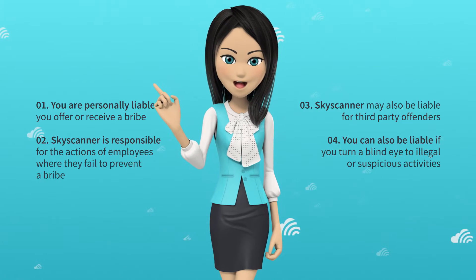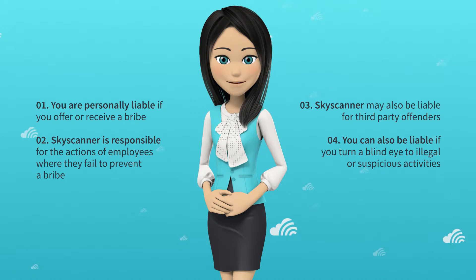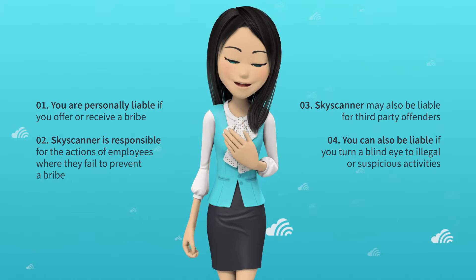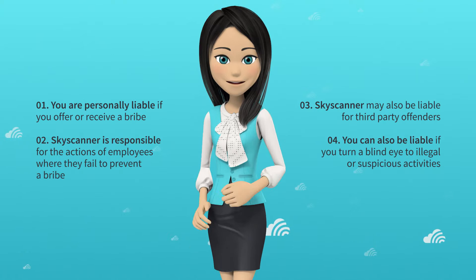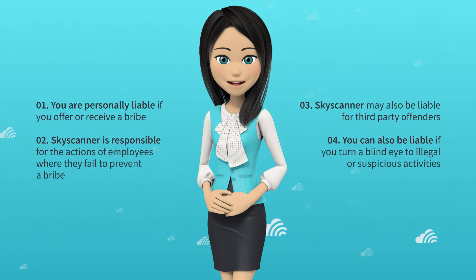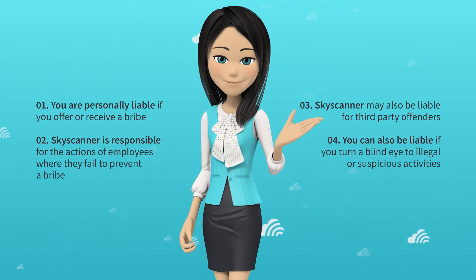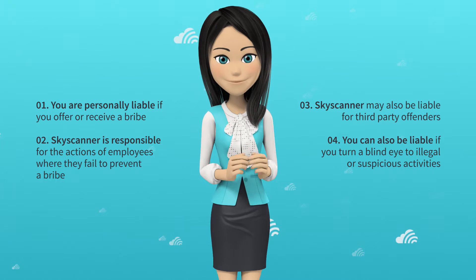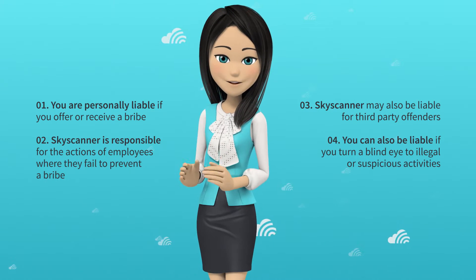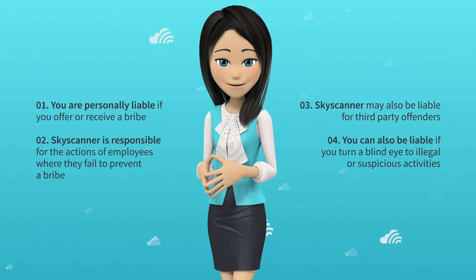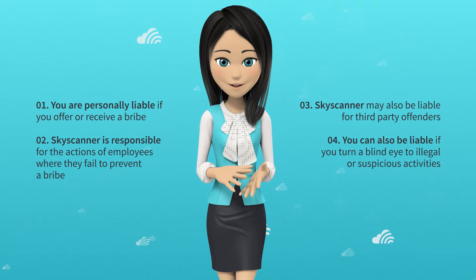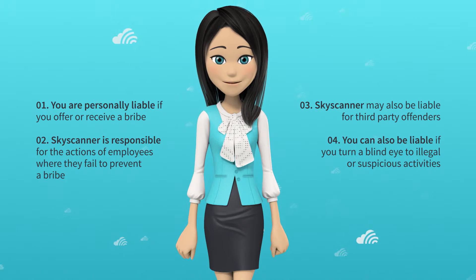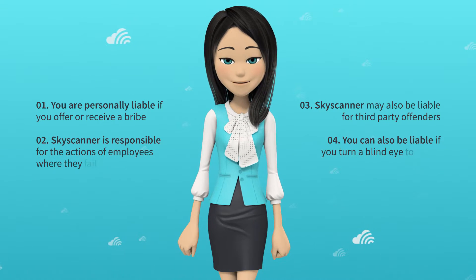You are personally liable if you offer or receive a bribe. Skyscanner is responsible for the actions of employees or other people working on its behalf where they fail to prevent a bribe. Skyscanner may also be liable for third-party offenders — that is, third-party companies that we are working with. You can also be liable if you turn a blind eye to illegal or suspicious activities, particularly if you are in a managerial position or have direct reports.